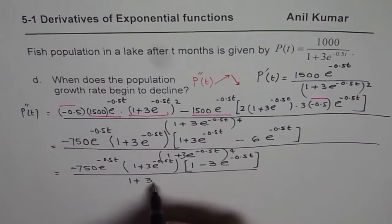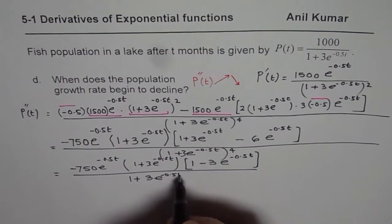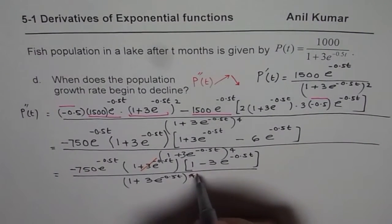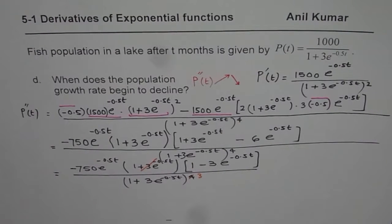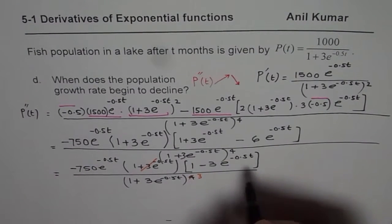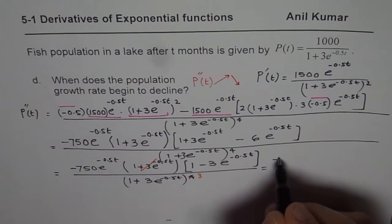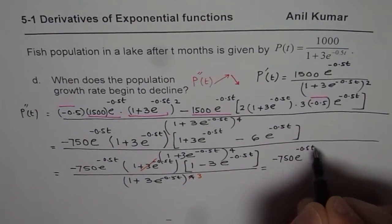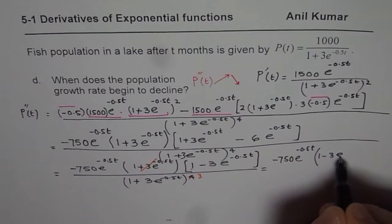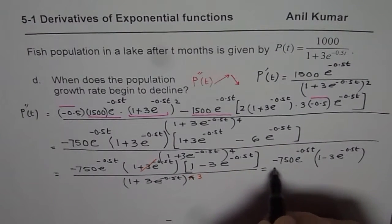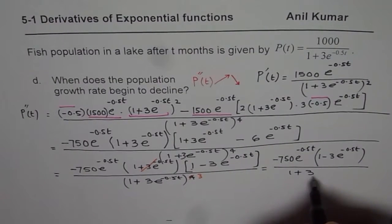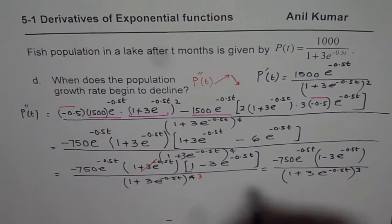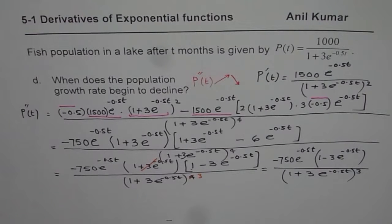We can cancel one of these factors, so the denominator becomes to the power of 3. What we get finally is the second derivative equals minus 750 e to the power of minus 0.5 t, times the quantity 1 minus 3 e to the power of minus 0.5 t, divided by 1 plus 3 e to the power of minus 0.5 t to the power of 3. That is our second derivative.